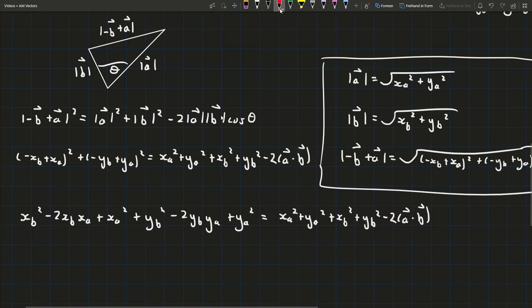Now we notice some really nice cancellations happen. xb² we have xb² on this side, xa² we have xa² on this side, yb² we have yb² on this side and ya² we have ya² on this side.